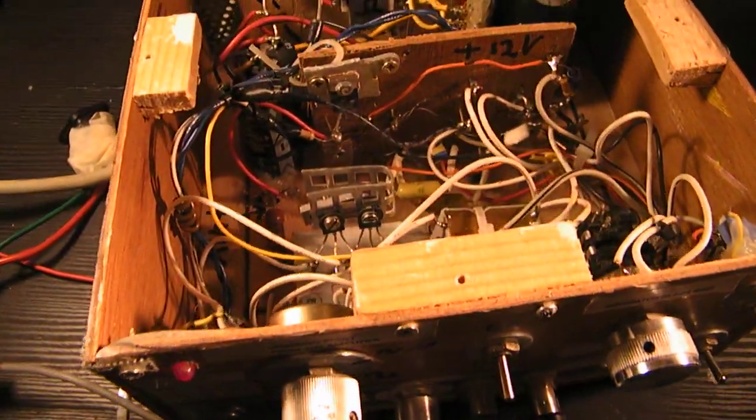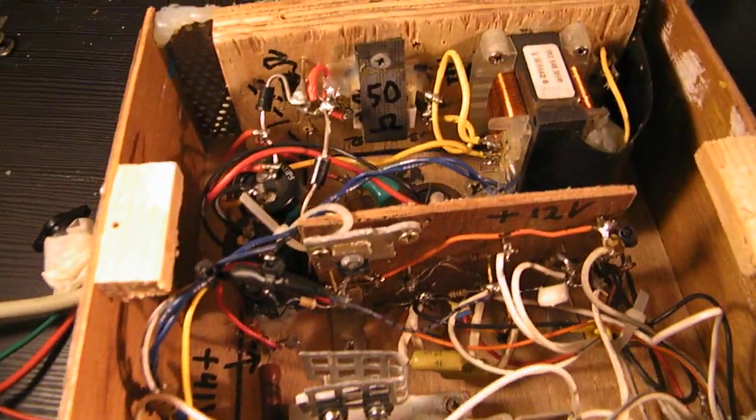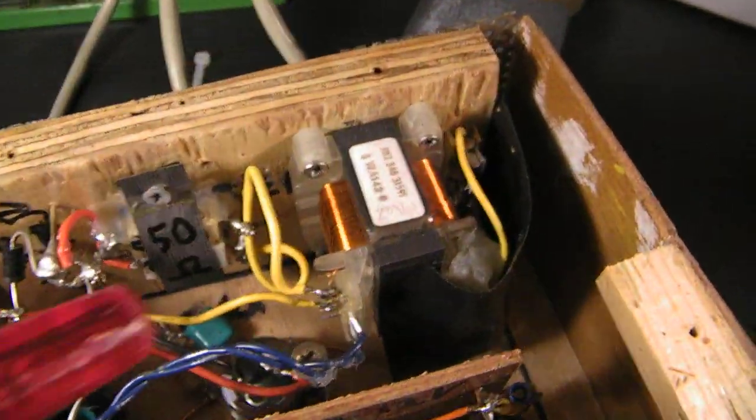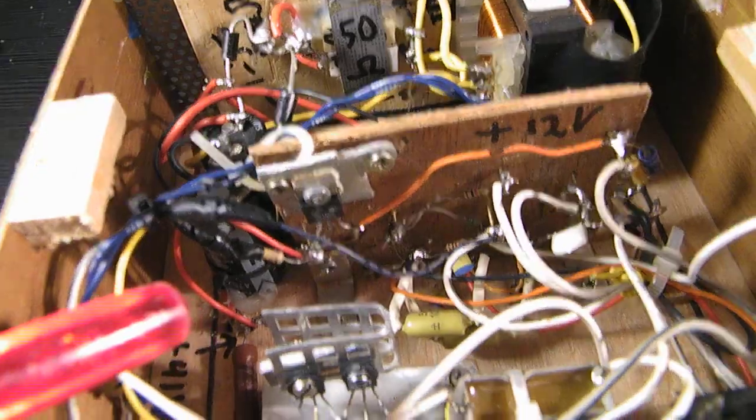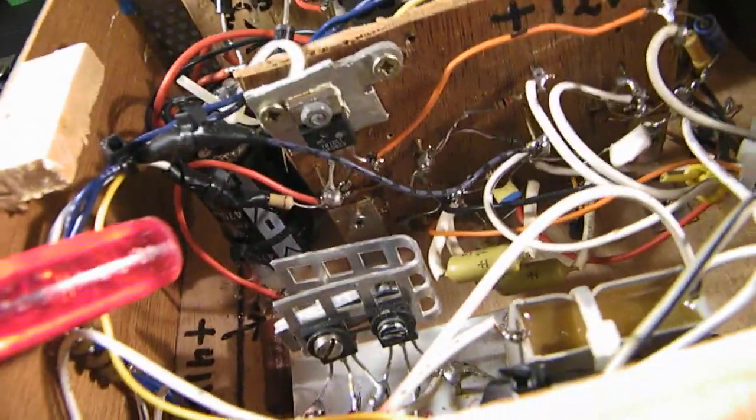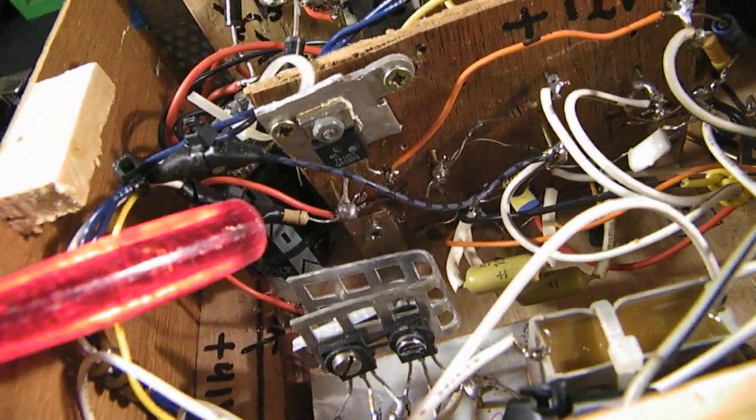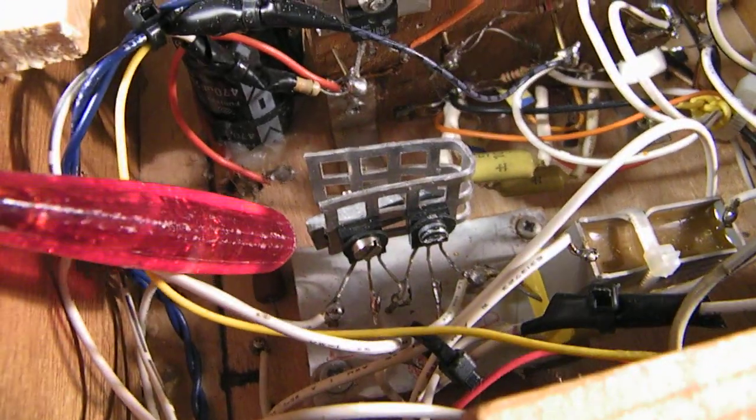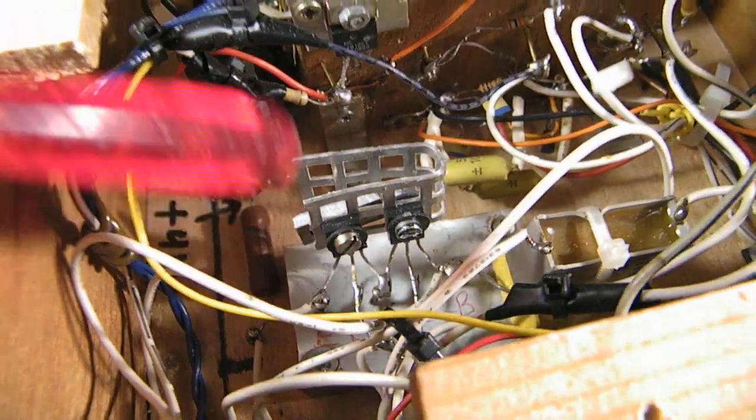And this is the real circuit. Very simple power supply transformer, 7812 stabilizer, power supply. And here that linear amplifier made with a Darlington. And here you see that Darlington.